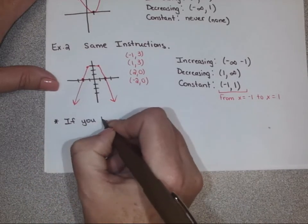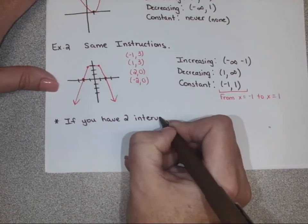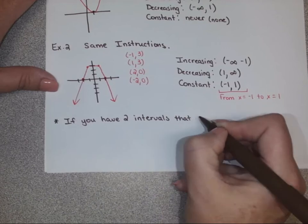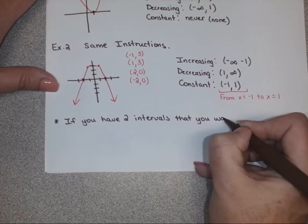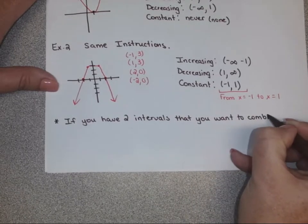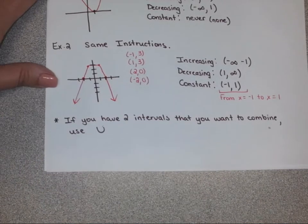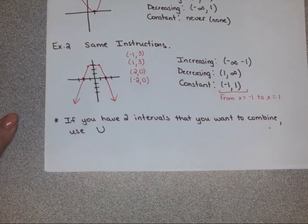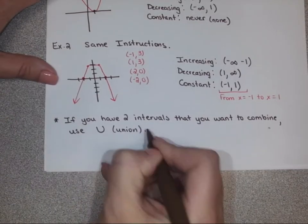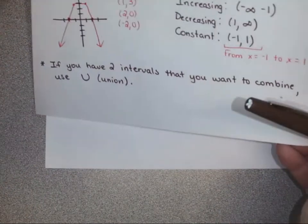Sometimes in more complex graphs, you might have two intervals you want to combine together in a particular section. If you want to combine multiple intervals — and by the way this would apply to domain and range also — you're going to use a capital wide letter U, which stands for union. Let's practice one where we might need to use that union symbol.